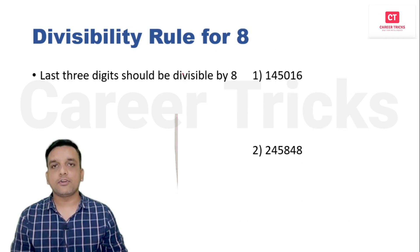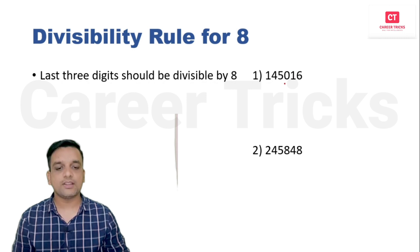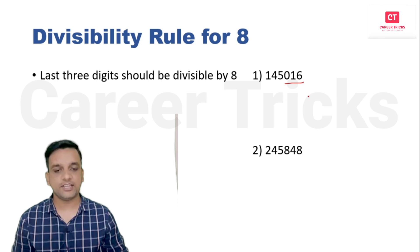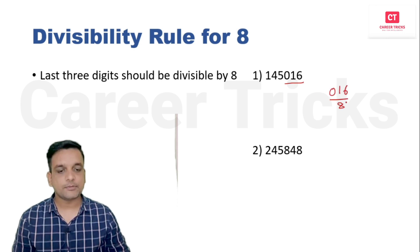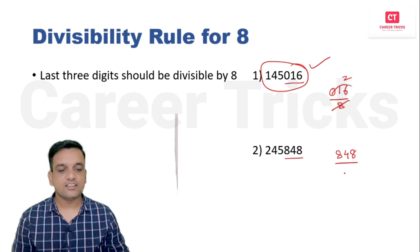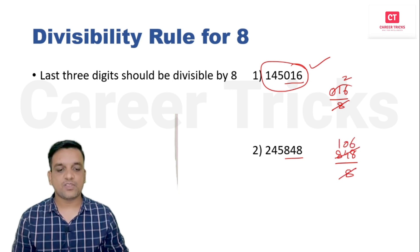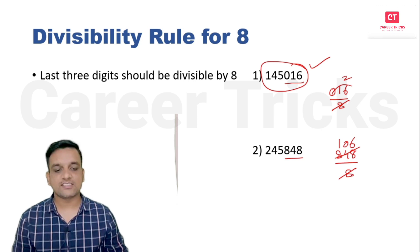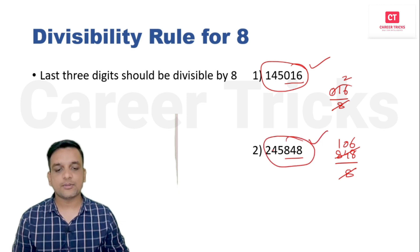Divisibility rule for 8: the last three digits should be divisible by 8. For the number shown, the last three digits are 016. Is 016 (i.e., 16) divisible by 8? Yes — 8 × 2 = 16. So the entire number is divisible by 8. Similarly, if the last three digits are 848, that is also divisible by 8, so the whole number is divisible by 8.